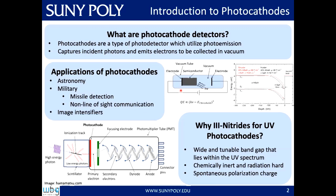Photocathodes have wide applications in astronomy for mapping the intergalactic medium and determining the composition of planets and stars, as well as military applications such as missile detection, non-line-of-sight communication, and image intensifiers. The 3-nitride material system is particularly well-suited for UV photocathodes as it has a wide and tunable bandgap within the UV spectrum. Additionally, the material is very chemically inert and radiation hard, giving it high reliability and long lifetime. The 3-nitride material system has a wurtzite crystal structure with spontaneous polarization charge, and can be grown in gallium polarity or nitrogen polarity orientations, each with its own polarization charge and resulting energy barrier at the surface.